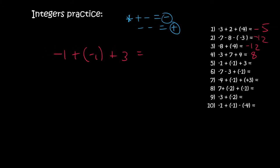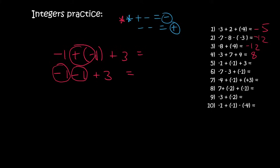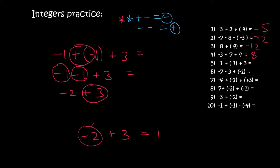Number five. I see students want to do this too quickly. Step one: get rid of those brackets. Here we've got a plus and a minus again, so that's just a minus, and then plus three. You owe people one rand, then you owe people another one rand, so so far you owe minus two rand. Then someone comes along and gives you three rand. If you owe two rand and someone gives you three rand, you can pay off the two rand that you owed and still have one rand left over for yourself.